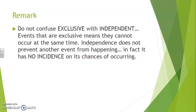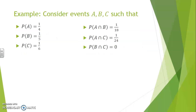Don't confuse exclusive with independent. Events that are exclusive means they cannot occur at the same time. Independence does not prevent another event from happening — in fact, it has absolutely no incidence on its chances of occurring. For instance, here are a bunch of events: P of A is 1/4, P of B is 1/5, P of C is 1/6, and their mutual intersections are: P(A∩B) = 1/18, P(A∩C) = 1/24, and P(B∩C) = 0, meaning it's impossible.